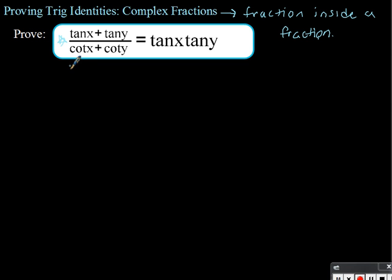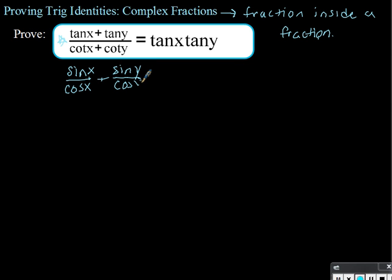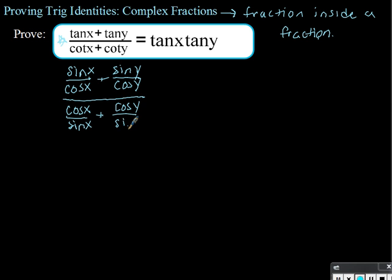We're going to start by changing all of our tangents and cotangents into sines and cosines. So we're going to rewrite tangent of x as sine of x over cosine of x, plus sine of y over cosine of y, all over cotangent — which is just the opposite — so cosine of x over sine of x, plus cosine of y over sine of y. And that's all going to equal tangent of x times tangent of y.